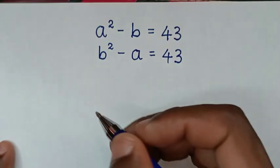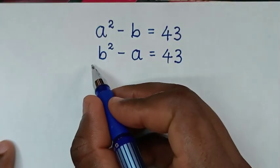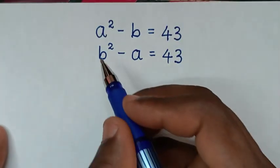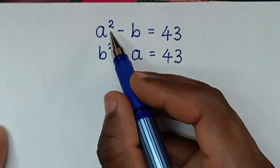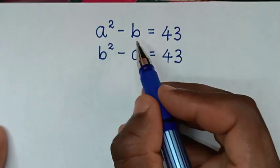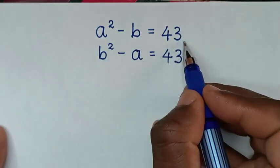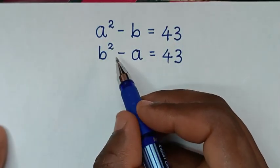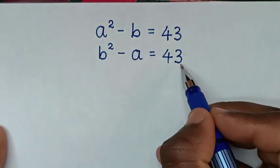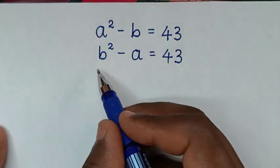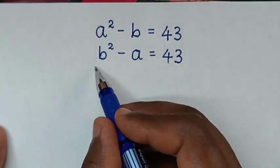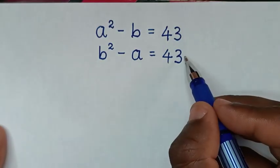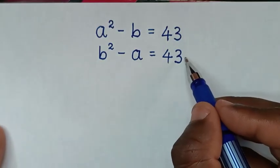Hello, you are welcome to solve this math problem: a squared minus b is equal to 43, and b squared minus a is equal to 43. We need to find the values of a and b from these two systems of equations.